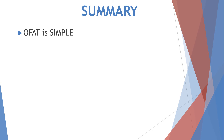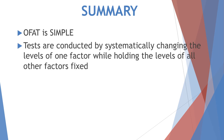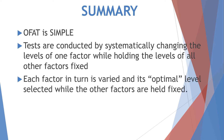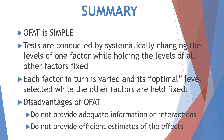To summarize our discussion: OFAT is a prevalent experimentation method commonly used by many engineers and scientists in both industry and academia. Tests are conducted by systematically changing the level of one factor while holding the levels of all other factors fixed. Subsequently, each factor in turn is varied and its optimal level selected while the other factors are held fixed. The disadvantages of OFAT are that it does not provide adequate information on the interaction of variables, and it does not provide an efficient estimate of the effects.